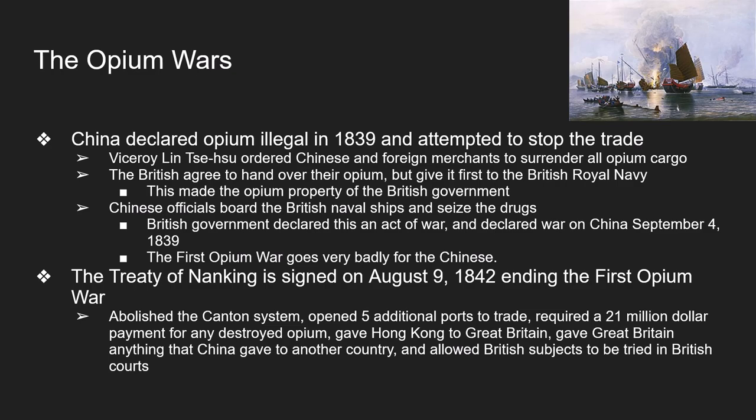China was forced to give certain privileges to the British but received nothing in return. The Treaty of Nanking gave Great Britain the ability to do business in five additional cities outside of Canton: Canton, Amoy, Fuzhou, Ningpo, and Shanghai. Those five port cities were now open to British merchants, government officials, families, and citizens. The Chinese were also forced to pay the British something like $21 million for the destroyed opium that had been deemed illegal.